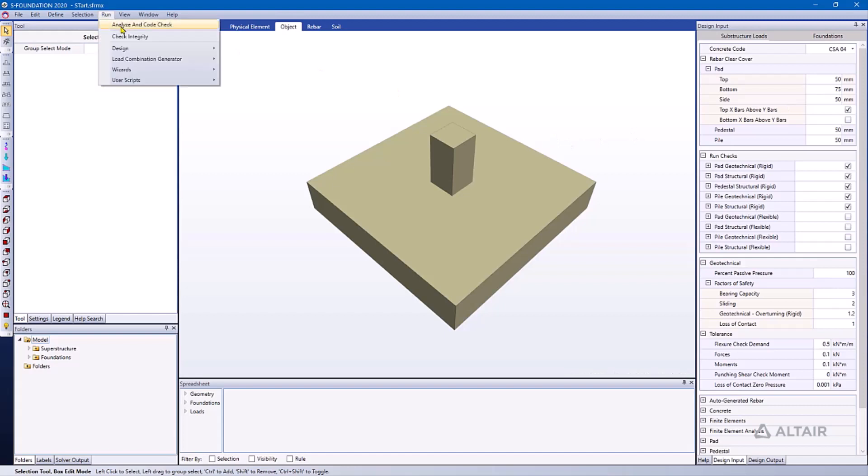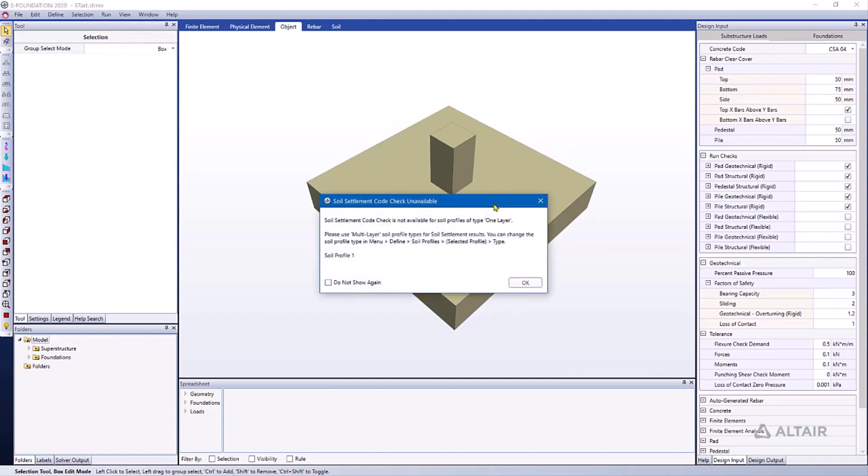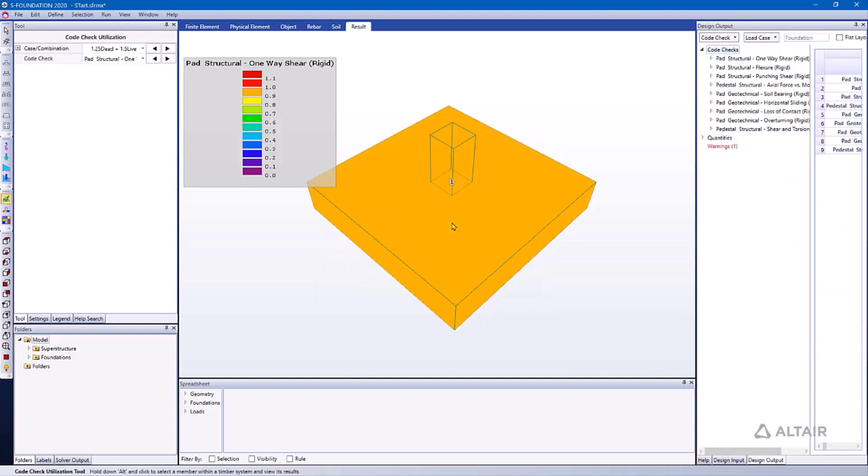So let's go ahead and run our analysis and code check. And we're able to get the results. And right now it's showing me the governing code check result, which is one-way shear. We've already got another video dedicated to one-way shear, so I'm not going to dive into this. But what I can do is I can change this code check display here just to show me the punching shear, or two-way shear.